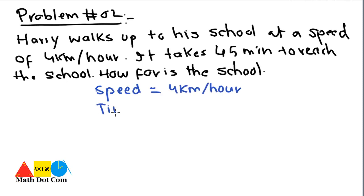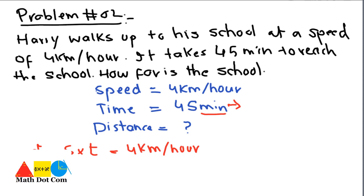The time it takes to reach the school is 45 minutes, and we have to find the distance. How far is the school? Let's find it out by the formula d = s × t. s is 4 km/hour, t is 45 minutes. As t is in minutes, we have to convert this time into hours first.